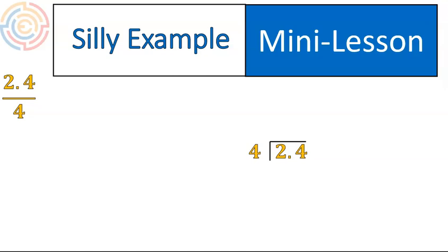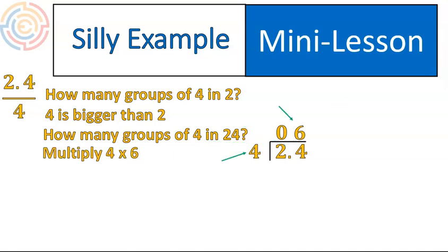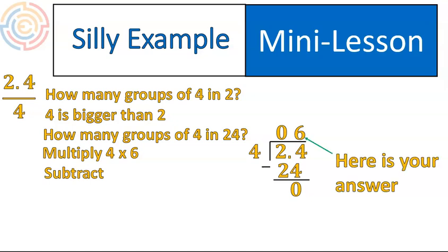Pretend that this said 24 divided by 4. We would say how many groups of 4 are there in 2? Well, 4 is bigger than 2, so 0. And then we'd say how many groups of 4 are there in 24? Notice we're ignoring that decimal, pretending it's not even there. And then the answer is going to go up there, 6. And then we would multiply those numbers, 4 times 6. Put our answer underneath here and subtract. Again, pretending that decimal doesn't even exist. 24 minus 24 is 0. And there we go. Here's our answer. The only difference is at this point, we add the decimal. And you can put that decimal up top at any time, as long as it's directly above where the decimal is inside of the division symbol. So that's our final answer, 0.6.